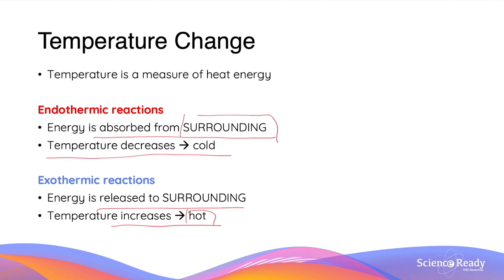One may wonder: if energy is being absorbed or released, do the products end up getting hotter or colder themselves? Recalling the conservation of energy from year 10 stage 5, energy can be transformed. The energy being absorbed or released by the system is in the form of chemical potential energy.